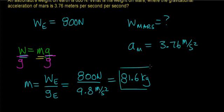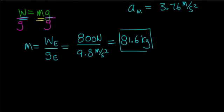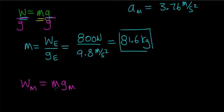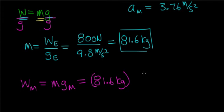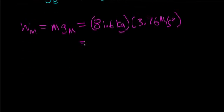A newton divided by a meter per second squared is a unit of kilograms. Now to find your weight on Mars, your weight on Mars — which I'll indicate with a subscript m — equals your mass times the gravitational acceleration on the planet Mars. Your mass does not change; no matter where you are in the universe, your mass will stay the same. So your weight on Mars equals 81.6 kg times 3.76 meters per second squared, which gives 306.9 newtons.